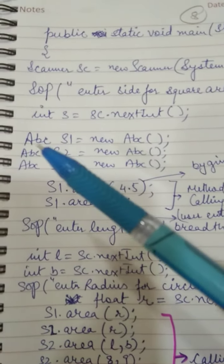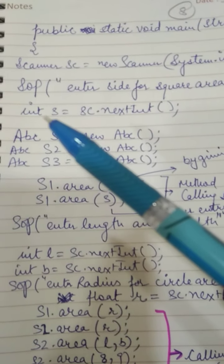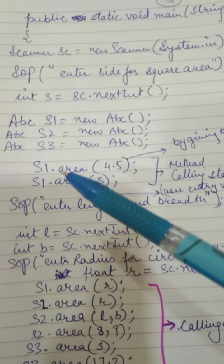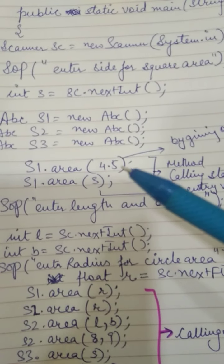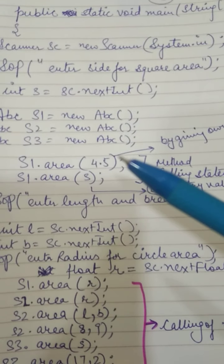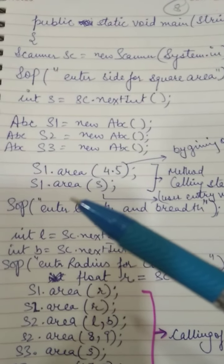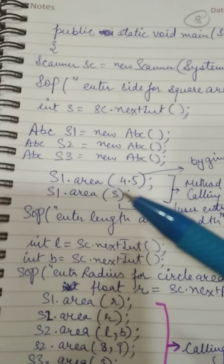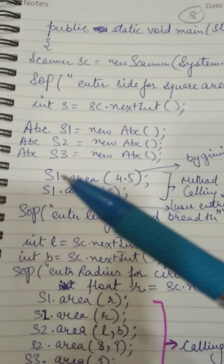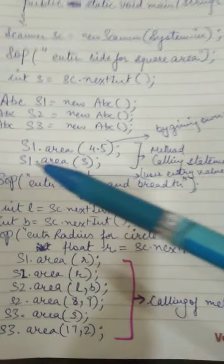Here we are making three objects s1, s2, and s3 of class abc. We have already learned that a class is an object factory — any number of objects can be created from the same class. s1 is calling the area method. Which area method is called depends on the value passed. In the first call we are giving our own value 4.5, and in the next statement s1.area(s), the value s was entered by the user.